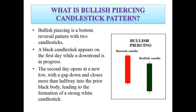So what is the bullish piercing candlestick pattern? This is a bottom reversal pattern with two candlesticks. A black or red candlestick appears on the first day while the downtrend is in progress. The second day opens at a new low with a gap down and closes more than halfway into the prior black body.